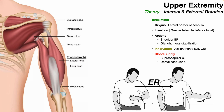Teres minor originates off the lateral border of the scapula and inserts on the inferior facet of the greater tubercle — those two facts make it a rotator cuff muscle. Its actions are the same as the infraspinatus: glenohumeral stabilization and shoulder external rotation. Its innervation is different though — it is innervated by the axillary nerve, with nerve root contributions from C5 and C6. Its blood supply is via the suprascapular and dorsal scapular arteries.